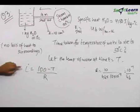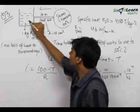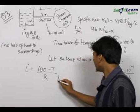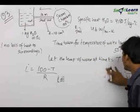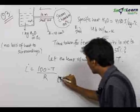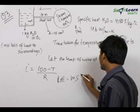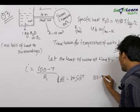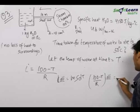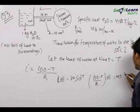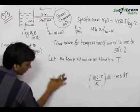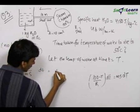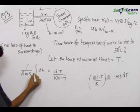Now let us solve the question. When the temperature is T, it rises by dT due to the heat current. The heat current multiplied by a small time interval dt gives the heat supplied in that time. This equals the mass of water times the specific heat times the small change in temperature dT. Rearranging, we get (1/R·m·s) dt = dT / (100 − T), where small dt is time and capital dT is temperature change. We integrate both sides.